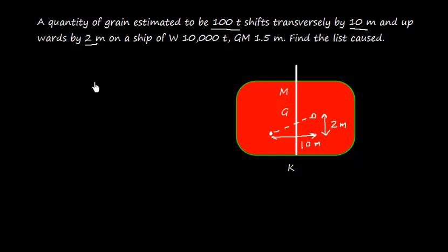We need to find the list caused. The list cause is tan theta equals list moment divided by capital W, which is the displacement, and GM. We should note that the list moment cause is the final list moment, and the displacement is also final, and GM is also final in the list formula.